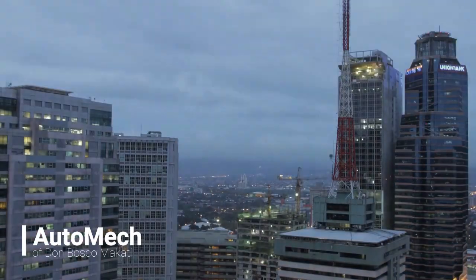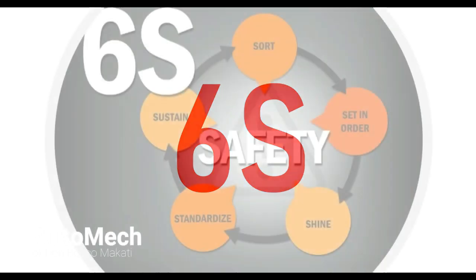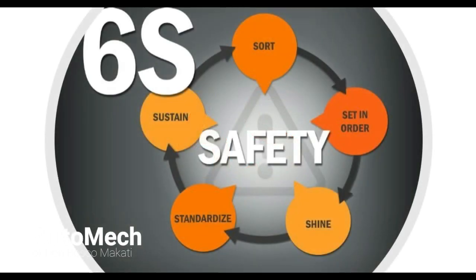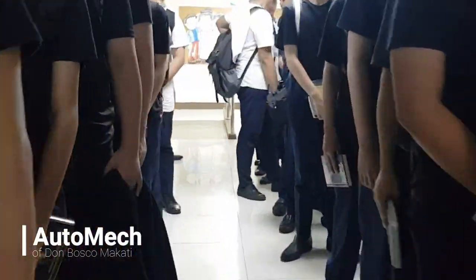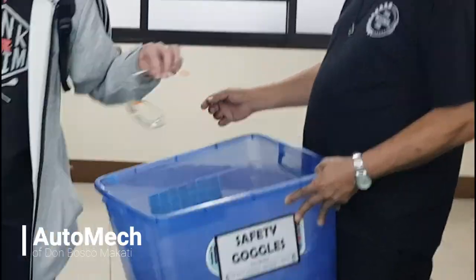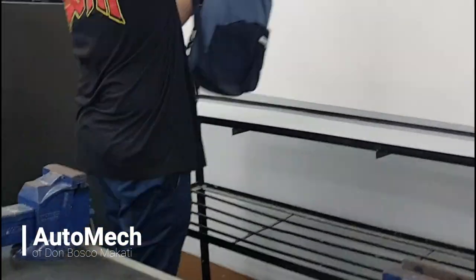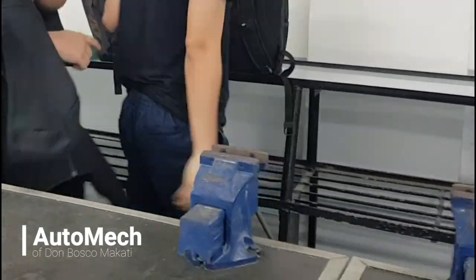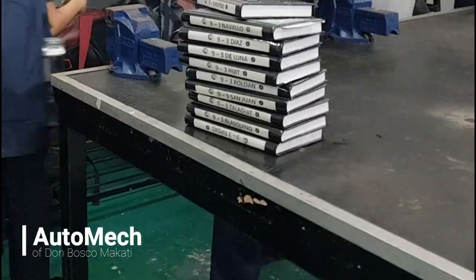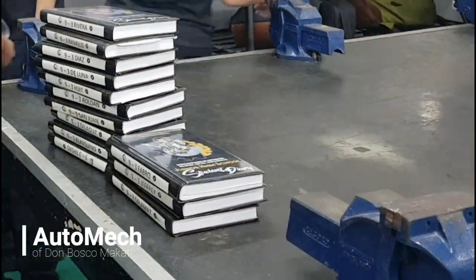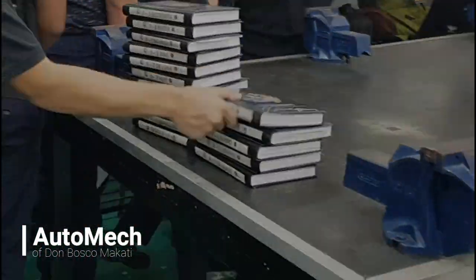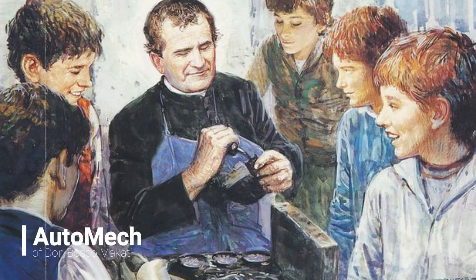As generations passed by, the 5S methodology was further improved into the 6S methodology, adding safety to the original 5S, as safety is an important element that is consistently being practiced throughout each S of the methodology. The 6S methodology may be hard to follow at the beginning; however, once established and practiced every day, it becomes a normal routine that unconsciously leads to discipline. Implementing and practicing the 6S methodology would make each and everyone busy and productive, keeping ourselves busy all the time would eliminate idleness — which is the workshop of the devil.